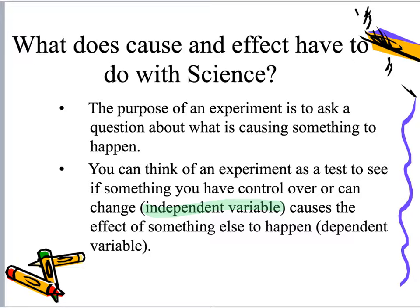In science, there are two main variables: the independent variable and the dependent variable. The independent variable is the variable that I like to think of as the one I independently have control over — I can change or manipulate it as the scientist. The dependent variable, on the other hand, is the response to the change made by the scientist. It's the variable being measured or observed — essentially the effect, the thing we believe is the consequence of what we changed.